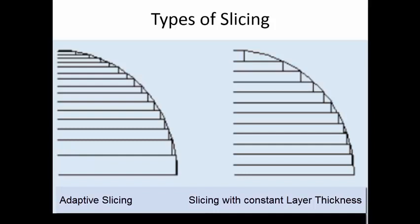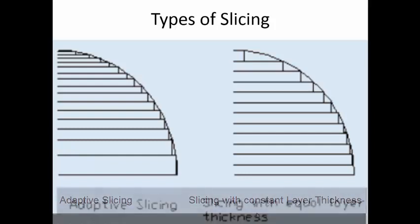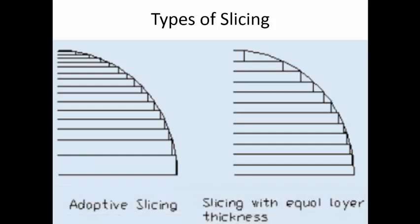When the layer thickness is varied according to the profile, that type of slicing is called adaptive slicing. When the same layer thickness is maintained throughout, it is called simple slicing. Some freely available software may not have the adaptive slicing module; you may need to purchase commercial slicing software to get those options.